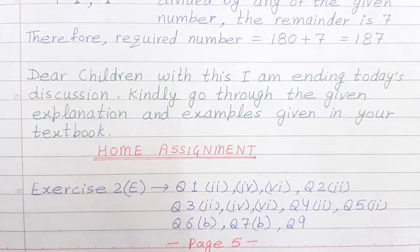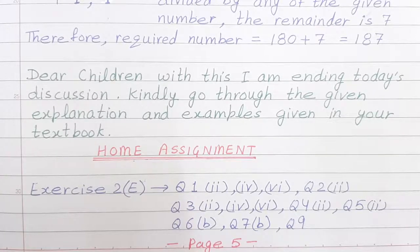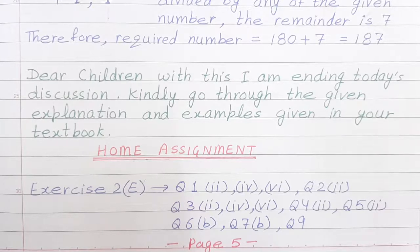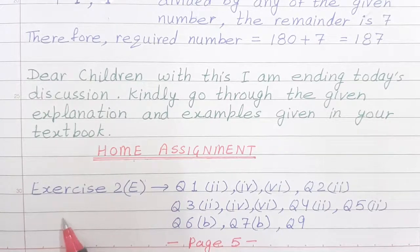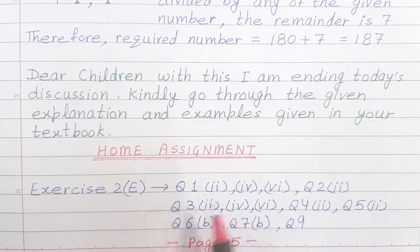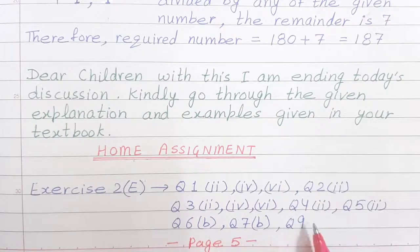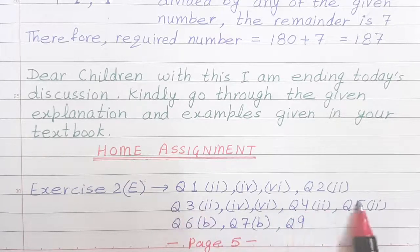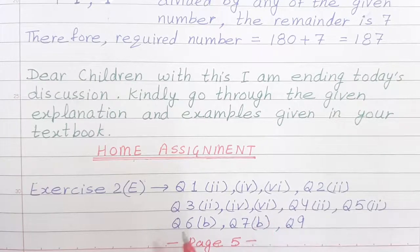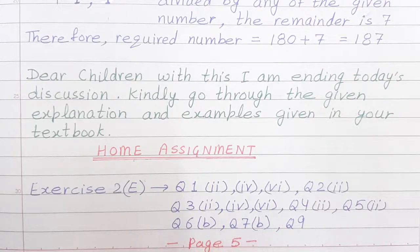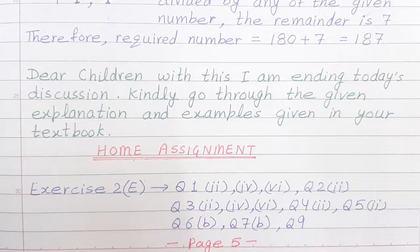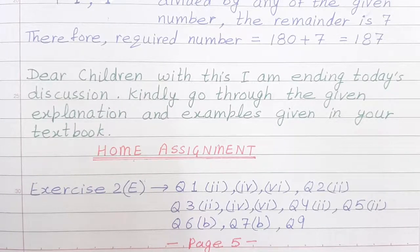Now, dear children, with this I am ending today's topic. Kindly go through the given explanation and examples given in your textbook. So, do the following questions in mass register from exercise 2E, that is question number 1, 2, 3, 4, 5, 6, 7, 9. Students, do the specific parts mentioned here. Now, along with the home assignment there is one revision test also given. So, kindly do all those questions given in your mass register. Thank you everyone.